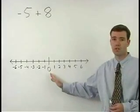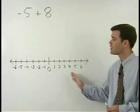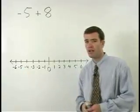On a number line, zero is in the middle. All numbers to the right of zero are positive and all numbers to the left of zero are negative.